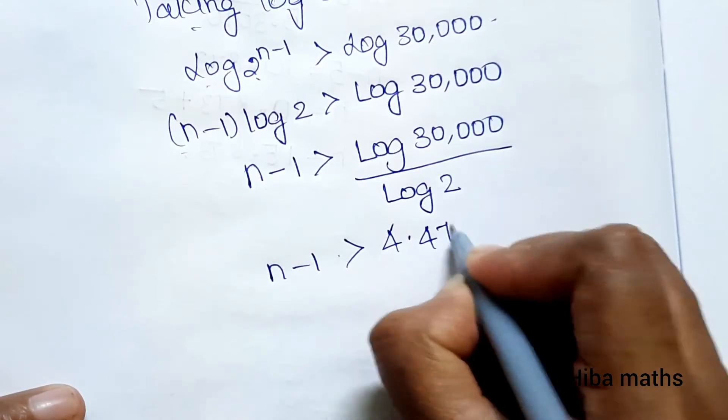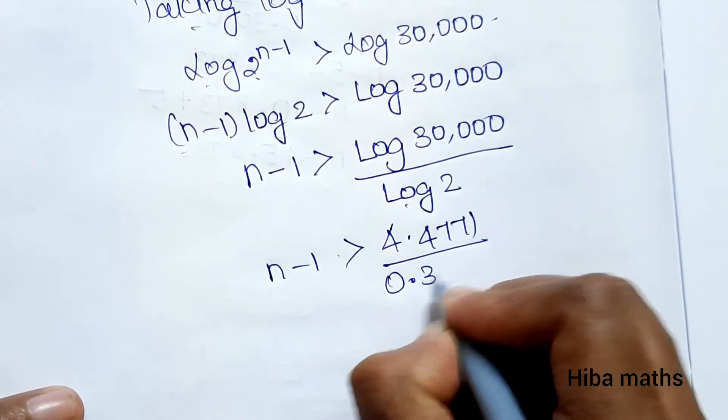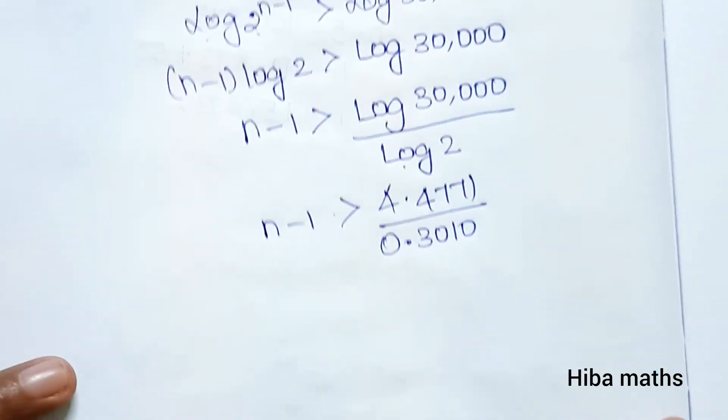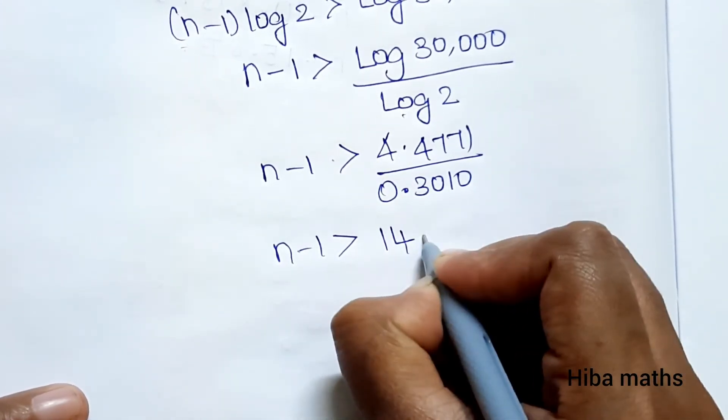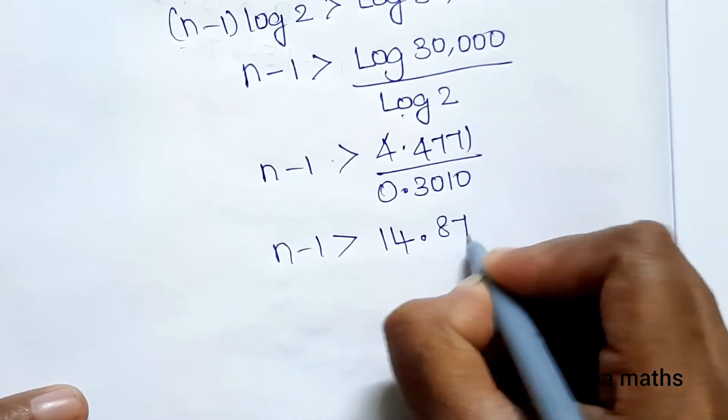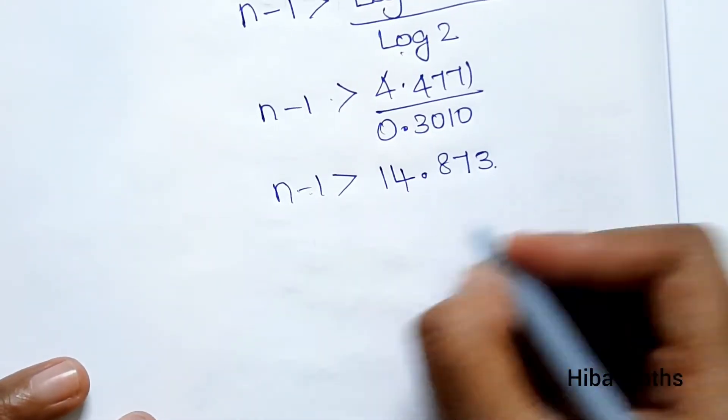n-1 is greater than 4.4771 divided by 0.3010. If we divide, this value is 14.873.